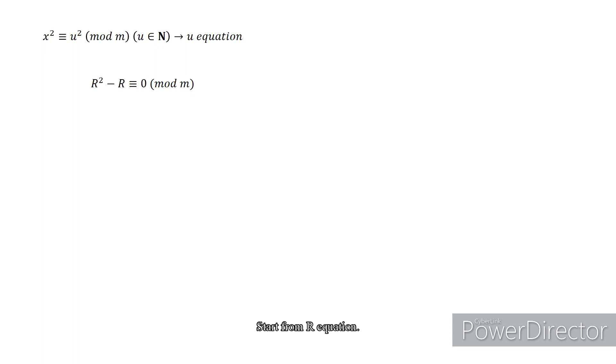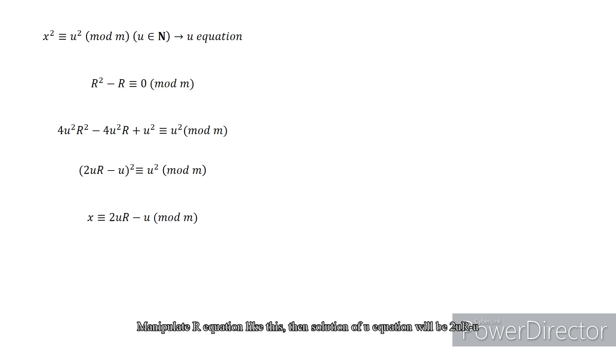Start from our R equation. From now, we will call the solution of R equation as r. Manipulate the equation like this, then the solution of U equation will be 2ur - u.